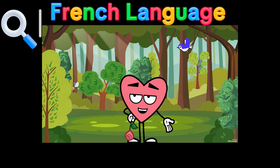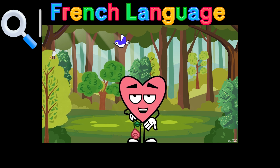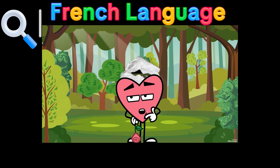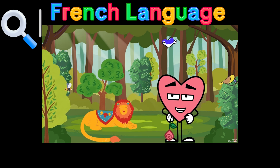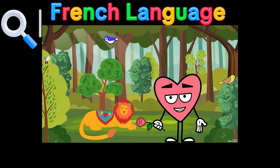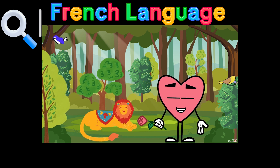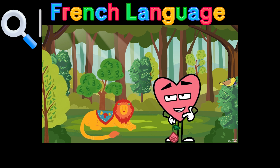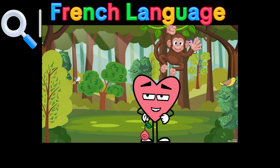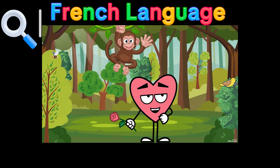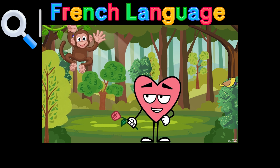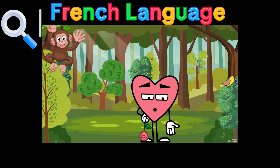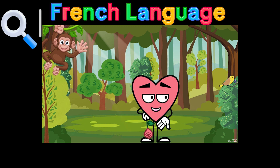Salut les amis! Bienvenue dans notre incroyable aventure animale. Aujourd'hui, nous allons découvrir des animaux incroyables. D'abord, visitons la savannah et rencontrons le puissant lion. Les lions sont connus comme les rois de la jungle, mais ils vivent en réalité dans les savanes. Ils ont un rugissement puissant audible jusqu'à huit kilomètres. Wow, c'est impressionnant! Maintenant, dirigeons-nous vers la forêt et trouvons notre ami, le singe joueur. Les singes sont très intelligents et adorent se balancer d'arbre en arbre. Saviez-vous que certains singes peuvent utiliser des outils comme des bâtons pour trouver de la nourriture? Ce sont des petites créatures astucieuses!